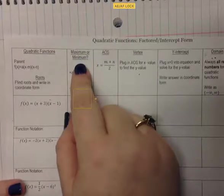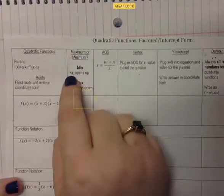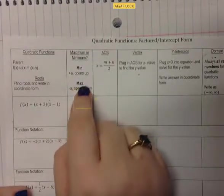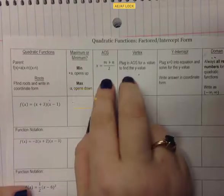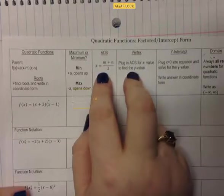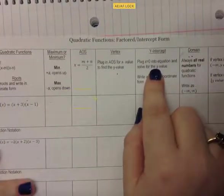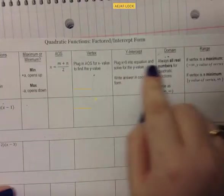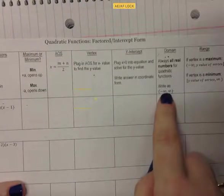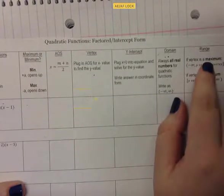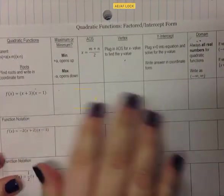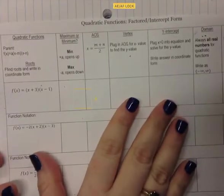We're going to determine our minimum or maximum. From quadratic basics, the a-value tells us if we're opening up or down, so if it's a minimum or maximum. We'll find our axis of symmetry and vertex — the axis of symmetry is the x-value of the vertex. We'll find our y-intercept where x equals zero, figure out domain and range, and determine the key point for function notation.